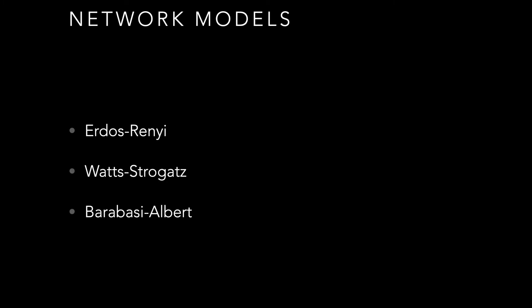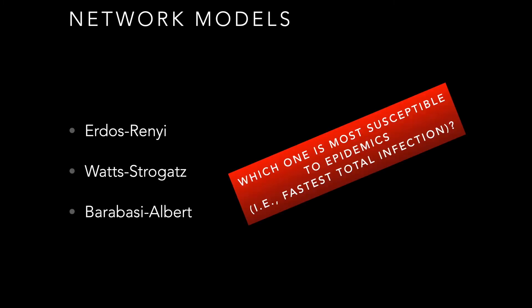When I talked about cascade capacity, I said this is a feature of a graph or a network. We can look at the different kinds of networks we've talked about and ask which ones are most susceptible to cascades or contagion. Some of the network models we've seen include the Erdos-Renyi model, the Watts-Strogatz model, and the Barabasi-Albert model. We can ask which one is most susceptible to spread or will result in the fastest total infection.